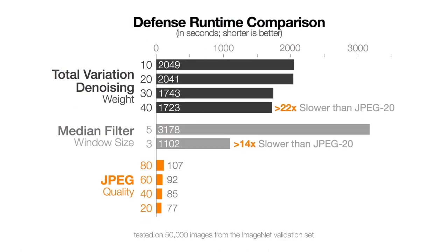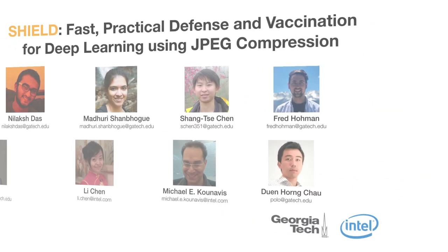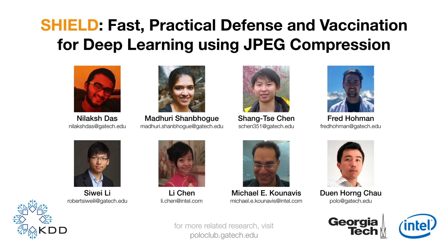We also conducted timing experiments on 50,000 images from the ImageNet validation set to compare JPEG compression, which is the workhorse of our approach, against other preprocessing techniques which have been shown to mitigate adversarial attacks in the literature. We see that JPEG compression significantly outperforms other techniques in terms of speed — the other techniques are at least 10 times slower. If you're interested in learning more about our work, please read our paper: SHIELD, Fast Practical Defense and Vaccination for deep learning using JPEG compression.